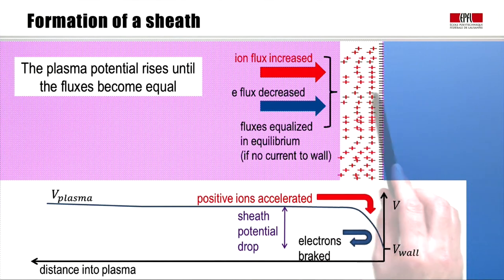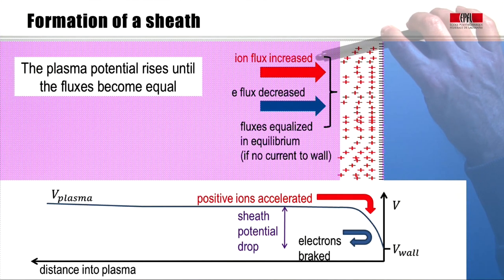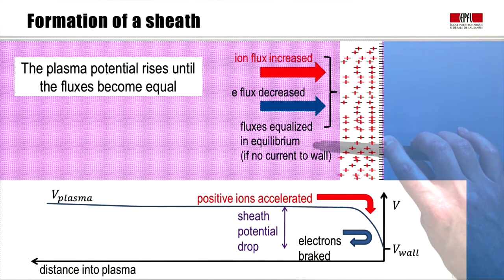When the electrons rush to the wall and the ions are left behind, the plasma potential rises until the fluxes become equal. As you can see on this voltage distance graph, the plasma potential rises. This potential drop across the sheath brakes the electrons to reduce the electron flux, and the electric fields now accelerate the positive ions across the sheath potential drop to the voltage of the wall. The ion flux is increased, the electron flux is decreased, and the fluxes are equalized in equilibrium if there is no net current to the wall.